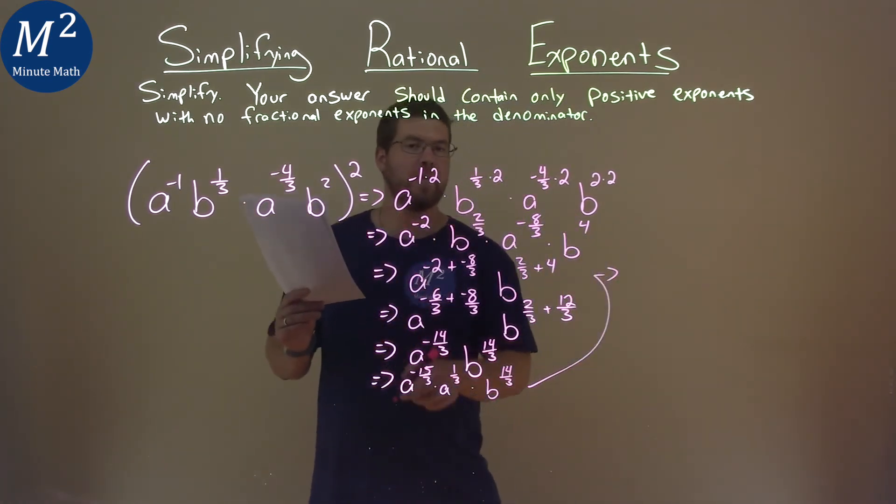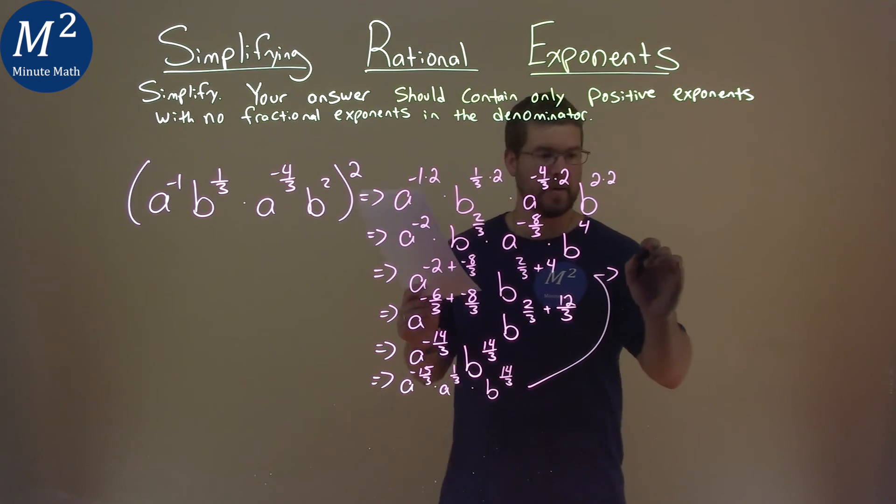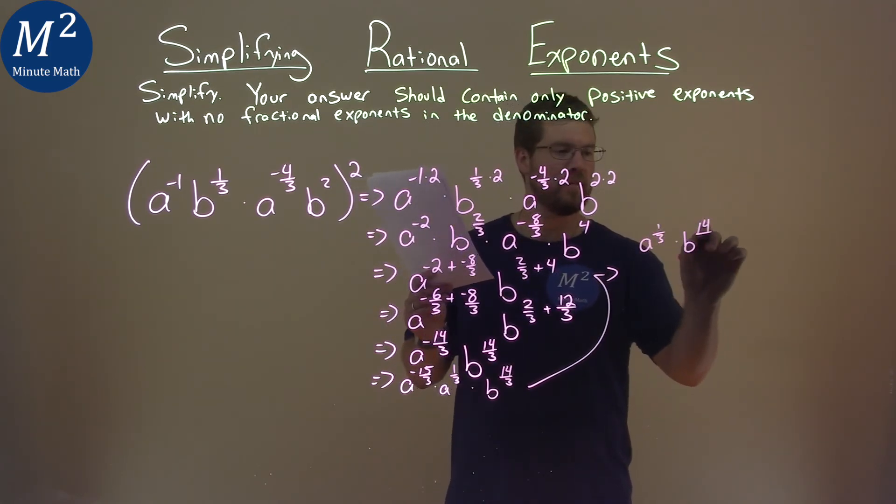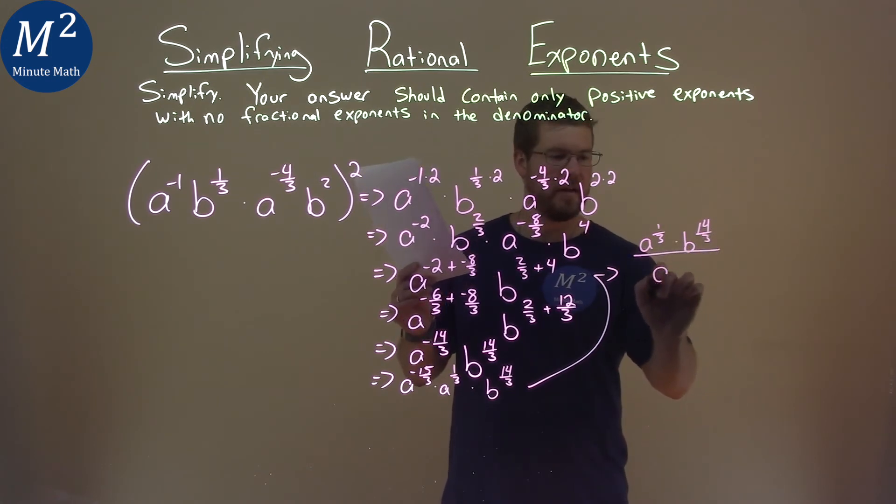a to the negative 15/3 goes down to the denominator. So we have a to the positive 1/3 here, b to the 14/3, and we have over a to the positive 15/3.